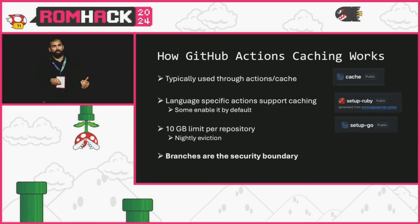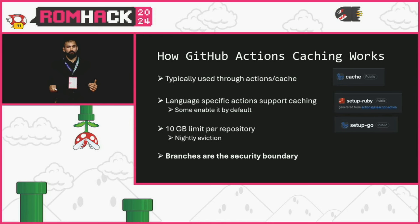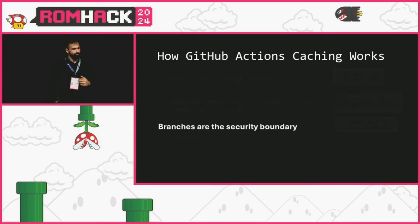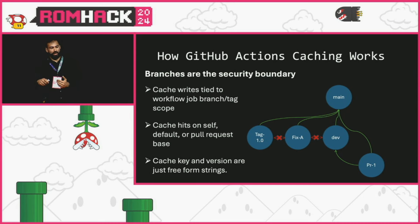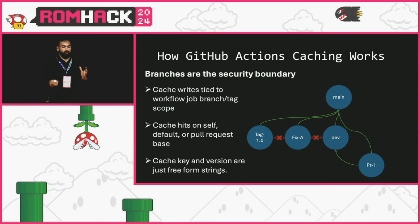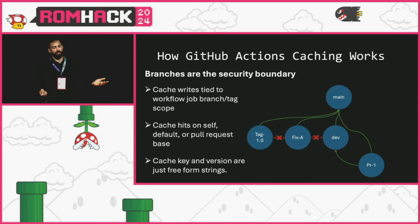The security boundary for cache access is determined by the branch where a workflow runs. The main or default branch is what every cache bubbles up to if there's no cache hit on itself — so a feature branch will fall back to the main branch cache. Cache keying and versioning are freeform strings handled entirely client-side, so you can set them to whatever you want. When you have a cache hit, that's how you can move laterally.